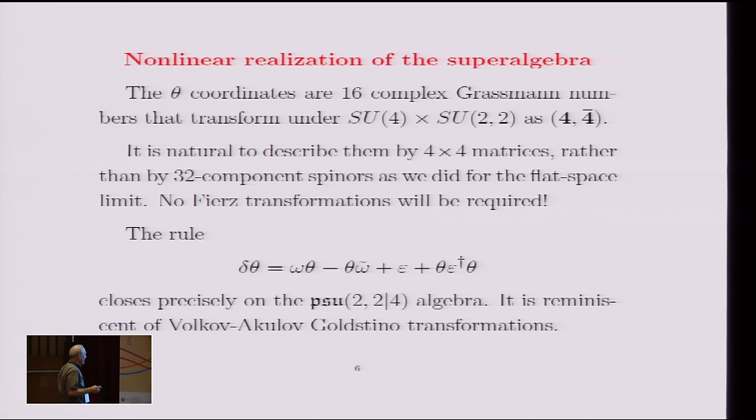So the multiplication by omega on the left is meant to represent an infinitesimal SU(4) transformation. This omega is some anti-Hermitian 4 by 4 matrix. And then when we multiply from the right with another similar looking matrix, that's supposed to be an infinitesimal SU(2,2) transformation. And then we have the fermionic transformations. In flat space, you would just have the epsilon term.